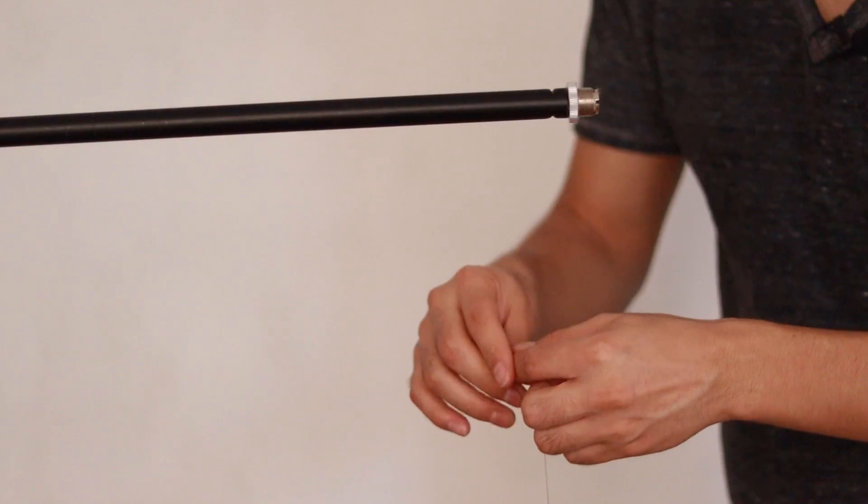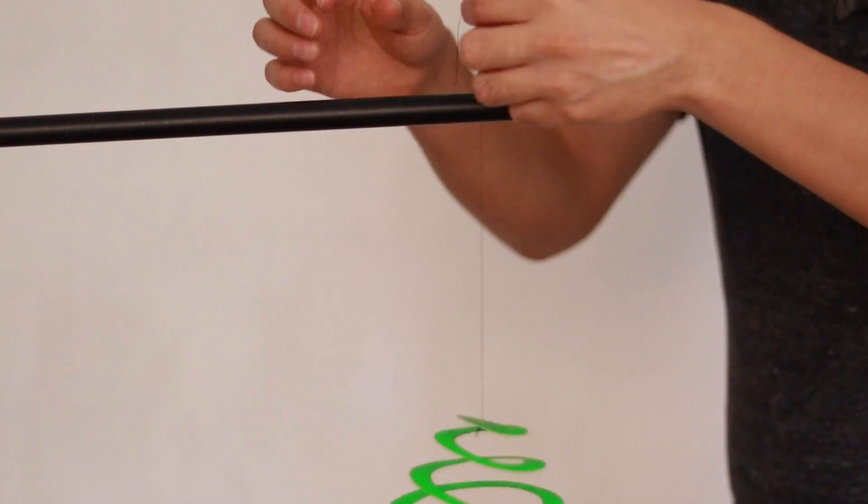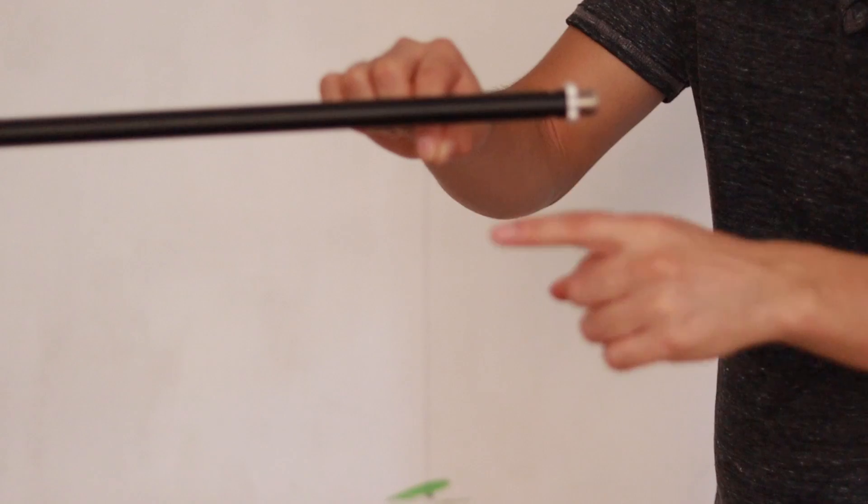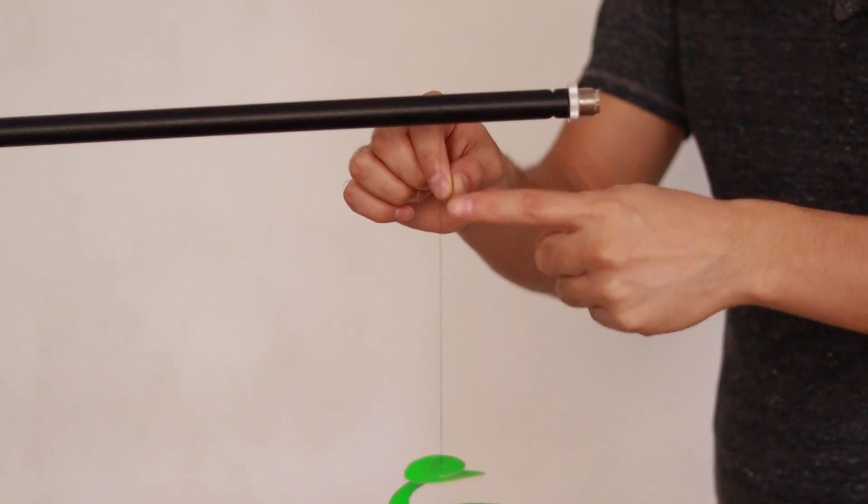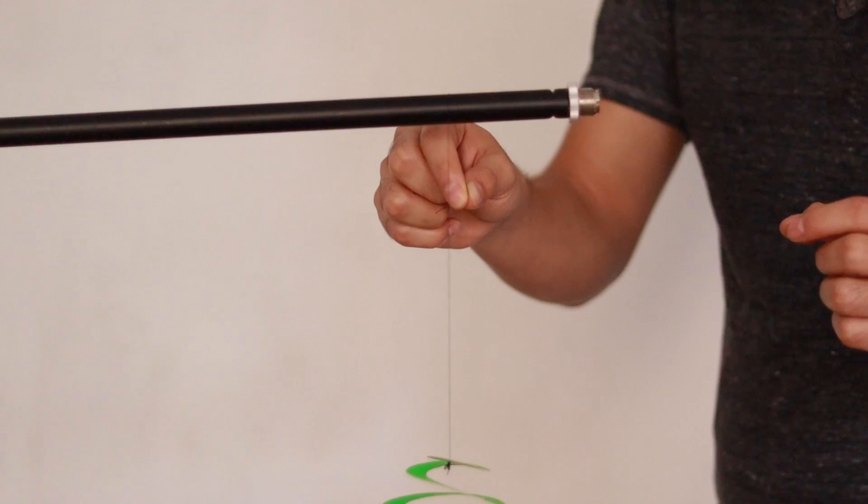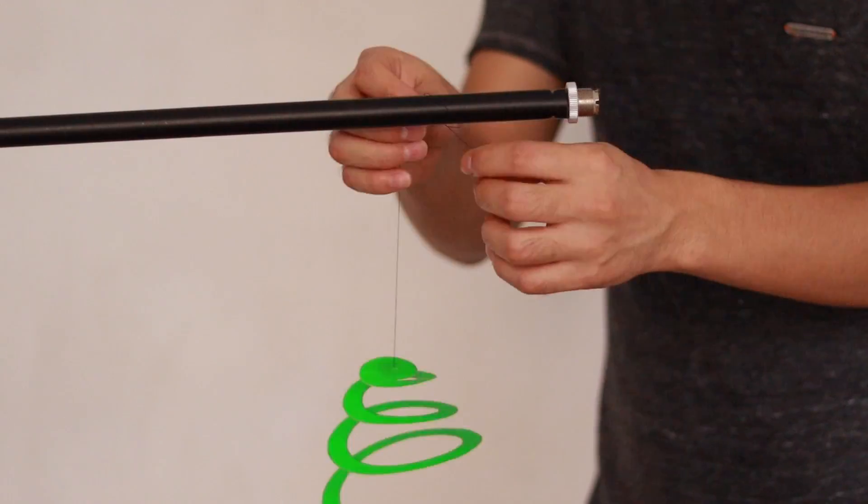Now let's attach our spiral to something fixed. It is important that we leave enough thread between the spiral and the object to which we are going to tie it so that the spiral can rotate freely.